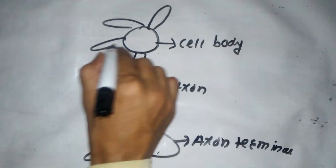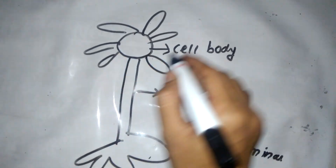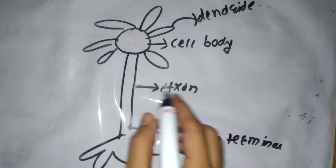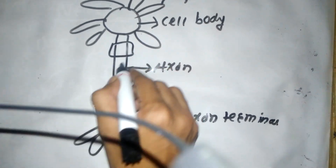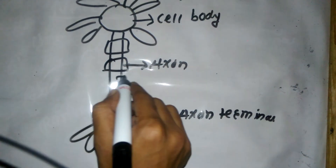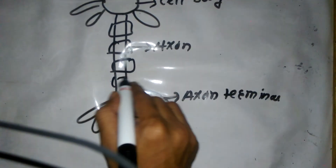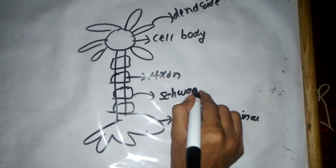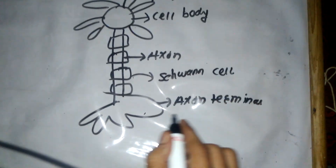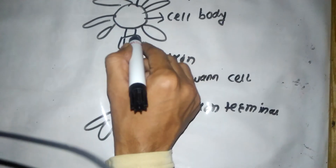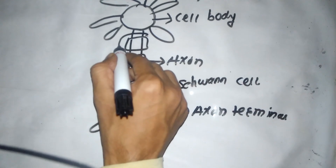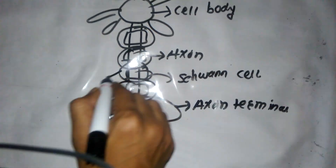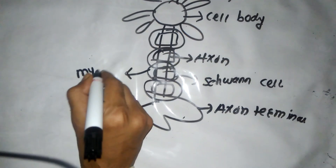This structure over the cell body, which we call the dendrite. After that, in the axon, some rectangular-shaped cells are present, which we call Schwann cells. These Schwann cells are protected or covered by a covering, which we call the myelin sheath.